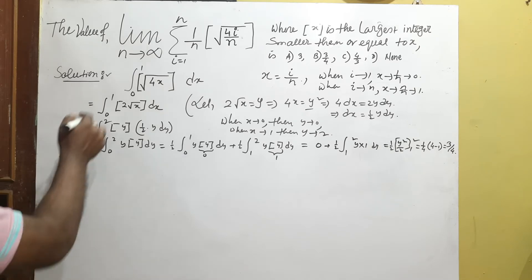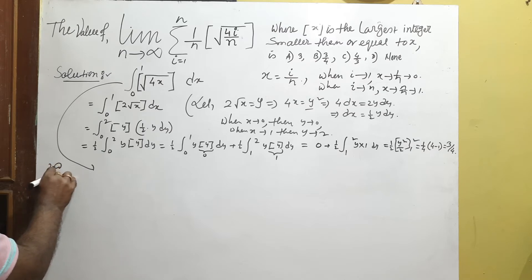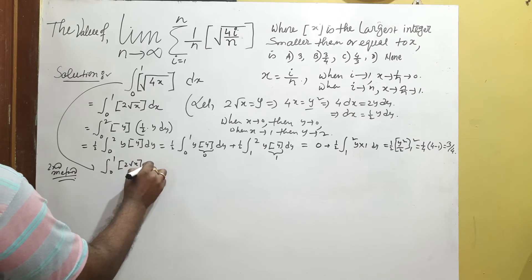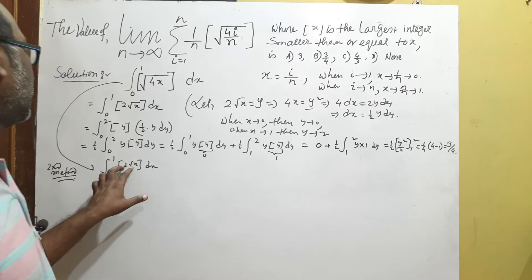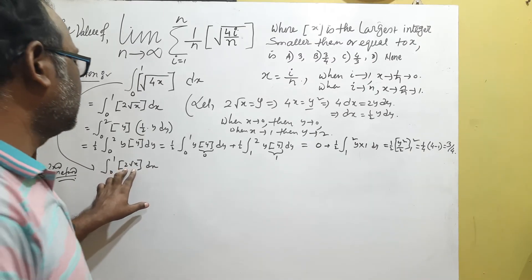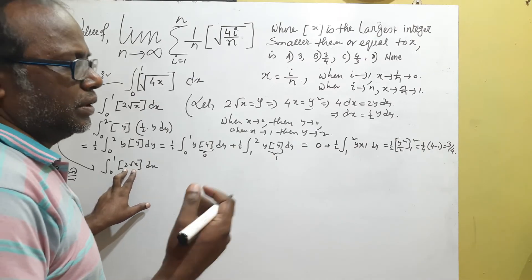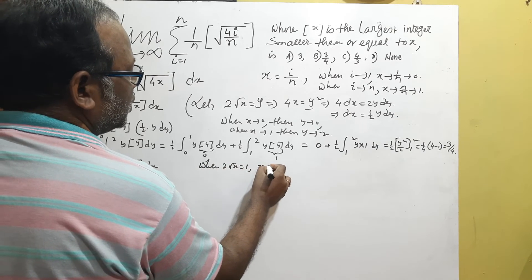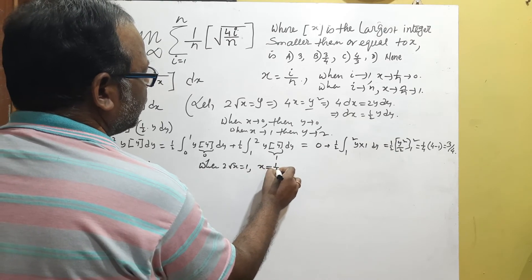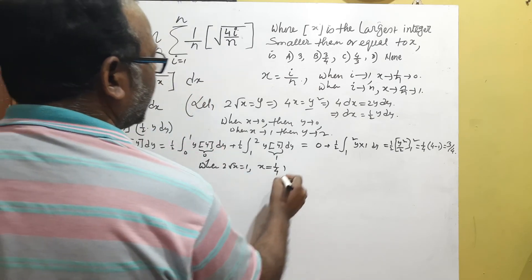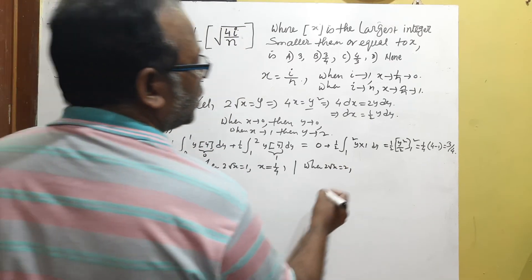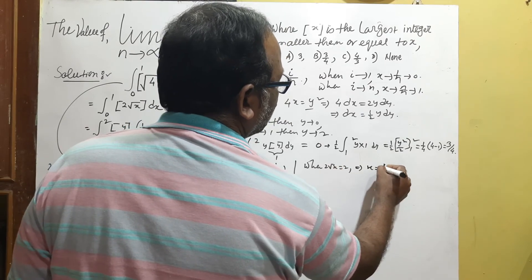Now solve this problem by the second method. We have ∫₀¹ floor(2√x) dx. The integer value of floor(2√x) is 1 when 2√x = 1, which gives x = 1/4. When 2√x reaches 2, x = 1.